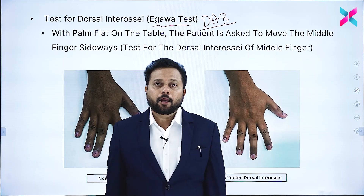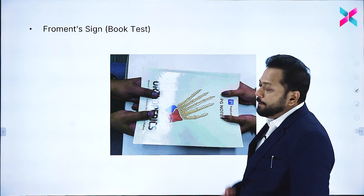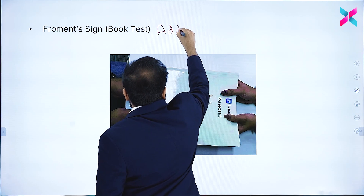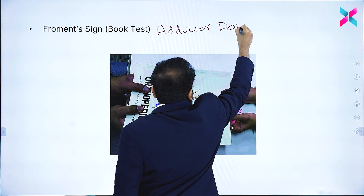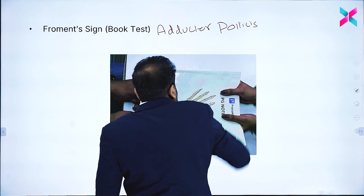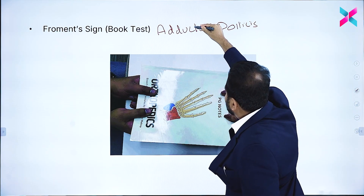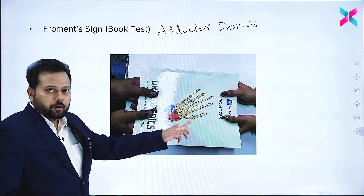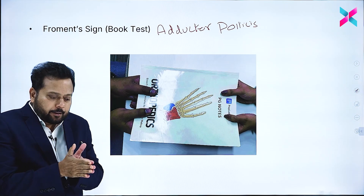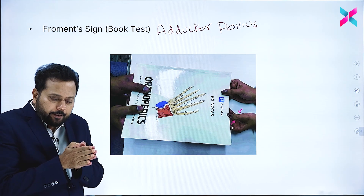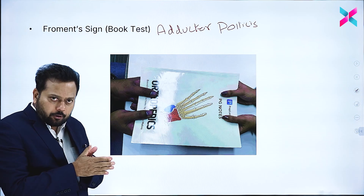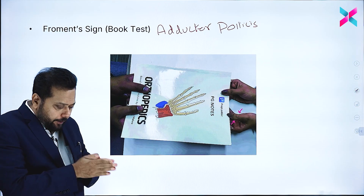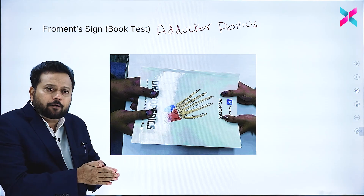Next is Froment's sign, also called the book test. This tests the adductor pollicis. When you ask the patient to catch a book between the thumb and the index finger and you try to pull the book, when the adductor pollicis — supplied by the ulnar nerve — is intact, you cannot pull the book because adduction of the thumb is possible.